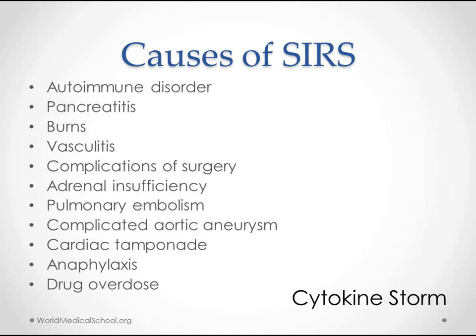As you can imagine, with this you're going to run into a lot of complications. The kinds of things that can start this kind of cascade include an autoimmune disorder, where the body is attacking itself; pancreatitis, where you get widespread inflammation; burns, which is often a full body inflammation type thing; vasculitis; complications of surgery where you get large amounts of inflammation; adrenal insufficiency; pulmonary embolism; complicated aortic aneurysm; cardiac tamponade; anaphylaxis; and drug overdose. You can imagine with all of these how the body is mounting this full-scale attack all over the place, and that leads to the complications involved in SIRS.